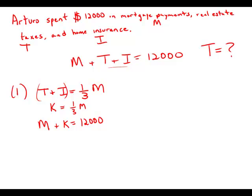This is two equations with two unknowns. We'd be able to solve for M and solve for K, so we'd know the actual numerical value of T plus I. But the problem is we would not be able to separate out how much was taxes and how much was insurance. So even with everything we'd be able to solve for with statement number one, we would not be able to get the actual numerical value of T. So by itself, statement number one is insufficient.